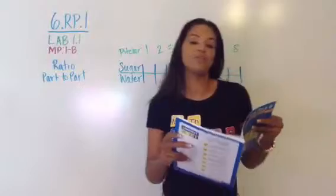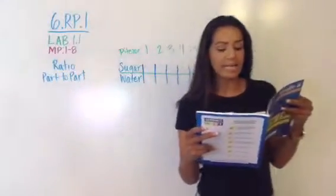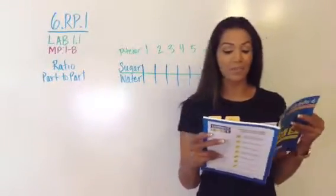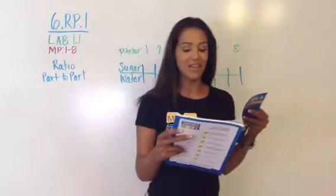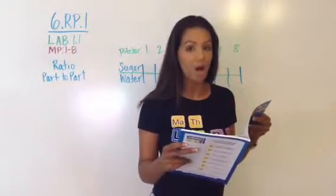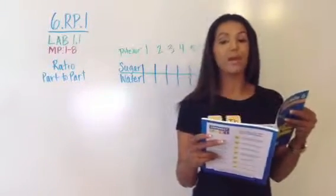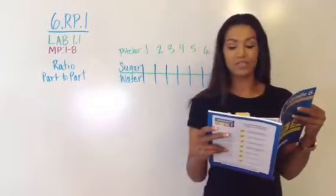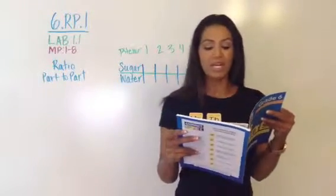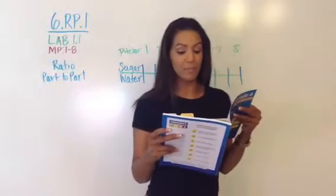All right, so let's go ahead and launch. This is an application problem, so I'm going to read it. It says Addie is planning a party and has a recipe for a pitcher of lemonade that calls for six cups of water for every one cup of sugar. She also needs five large lemons for the recipe. Each pitcher serves six people.